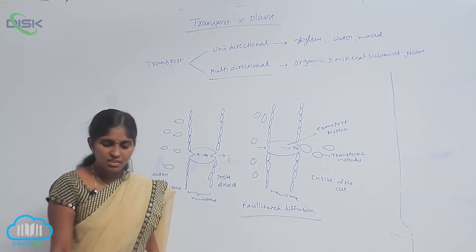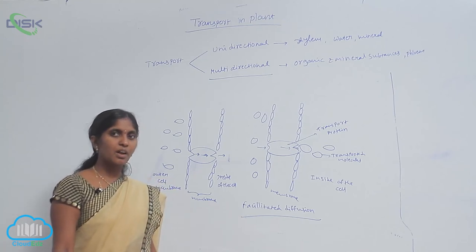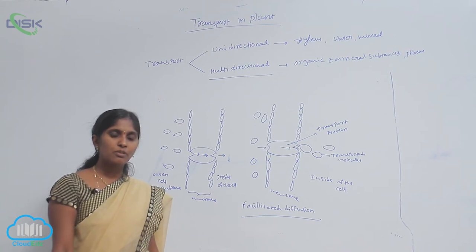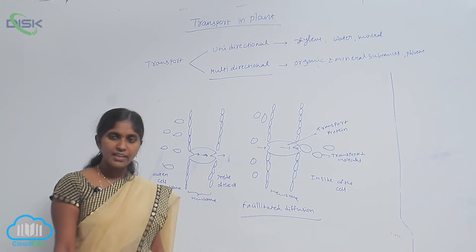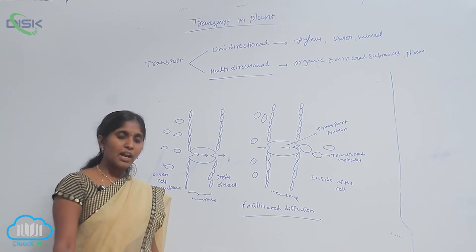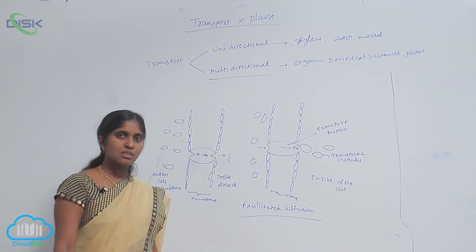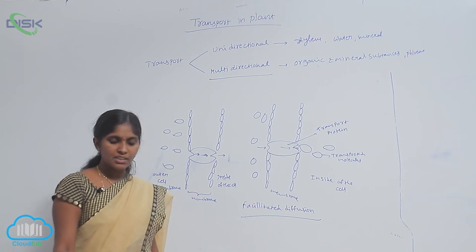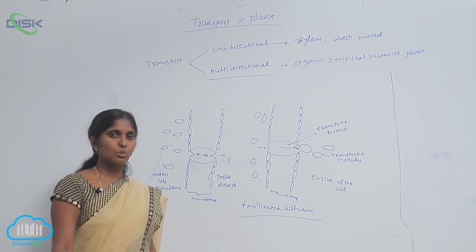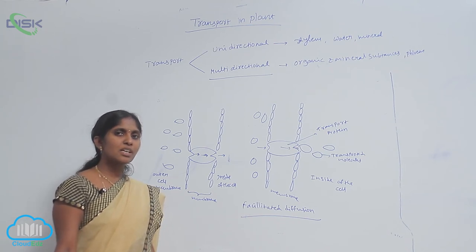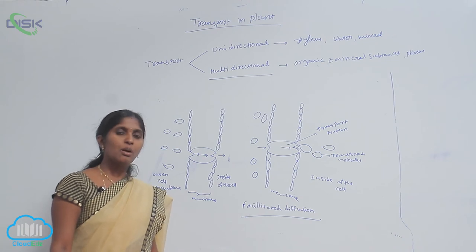Porins are proteins that form pores on the outer membrane of plastids, mitochondria, and some bacteria. They allow molecules up to the size of small proteins to pass through. This means small-sized proteins are able to pass through the porins.